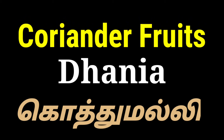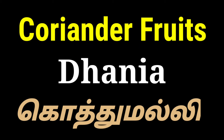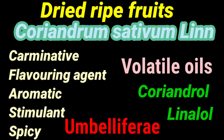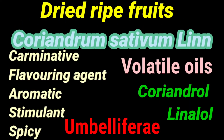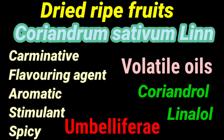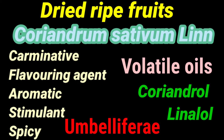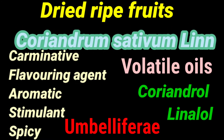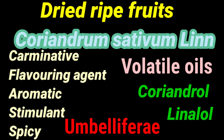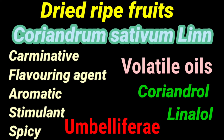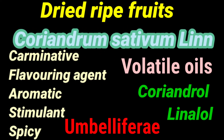Coriander fruits — in Hindi it is called dhaniya. It consists of the dried ripe fruits of Coriandrum sativum Linn, belonging to the Umbelliferae family. The major phytoconstituents are corianderal. The uses include flavoring agents, aromatic stimulants, and spice.